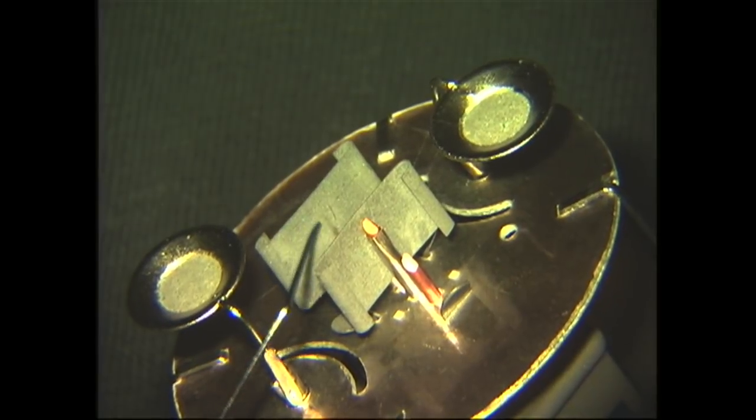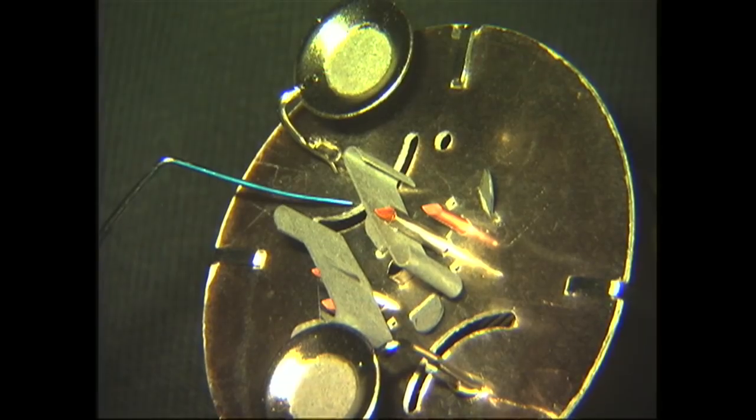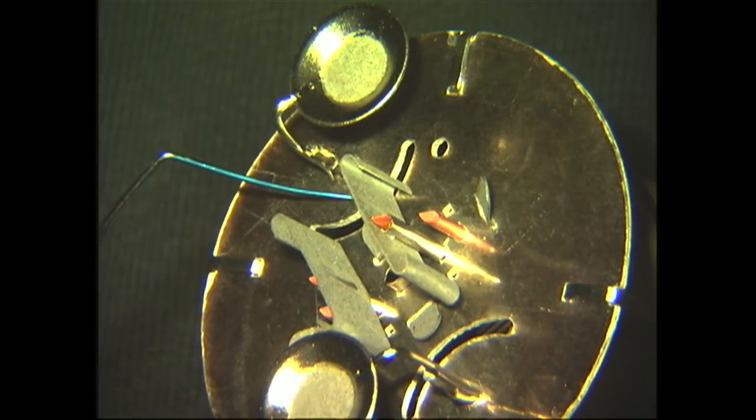These right here are the cooling fins. They are attached to the control grid inside the tube. These keep the control grid cooler to improve performance in the tube.